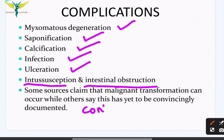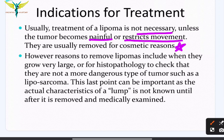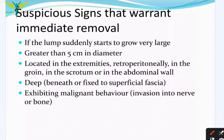Treatment of a lipoma is usually not necessary unless the tumor becomes painful or restricts joint movement. Most commonly, lipomas are removed for cosmetic reasons. Reasons to remove them include when they grow very large in size, or for histopathological examination to check if they are benign or malignant like a liposarcoma. The actual character of a lump is not known until it is removed and medically examined.